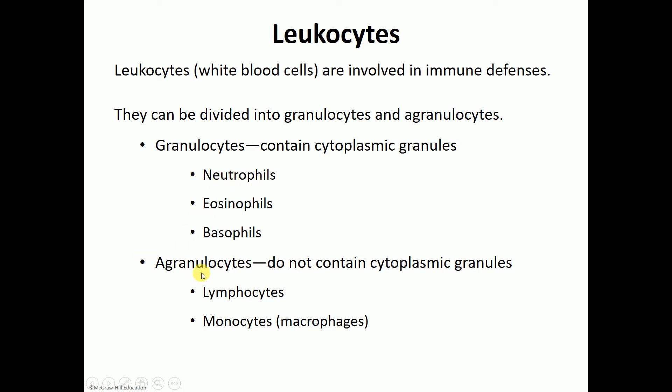The agranulocytes do not have cytoplasmic granules — you can't see them under a light microscope. Those are either lymphocytes or monocytes, also written as monocytes/macrophages because they are the same cell. When circulating in the bloodstream we call them monocytes, but as soon as they leave the bloodstream into the tissue they change into these very aggressively phagocytic cells known as macrophages.